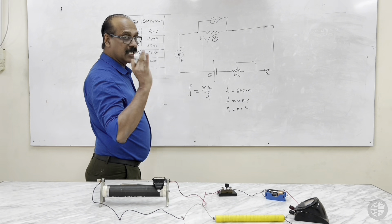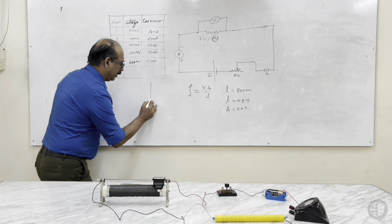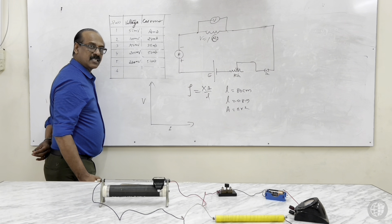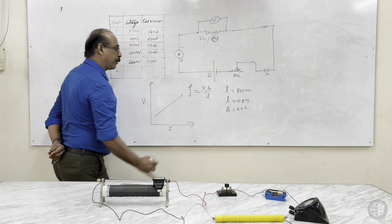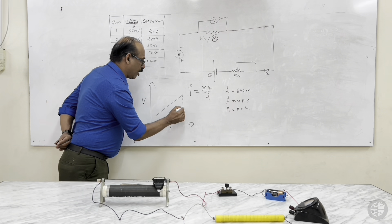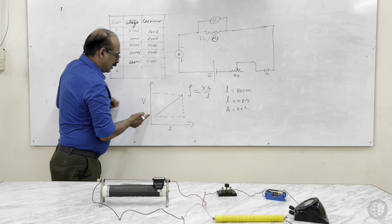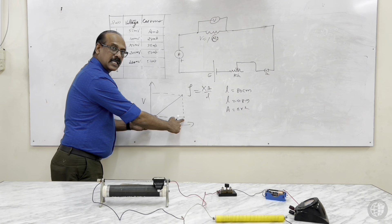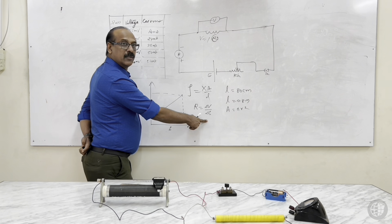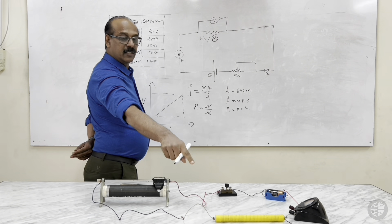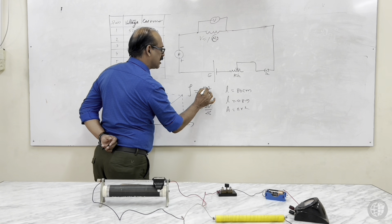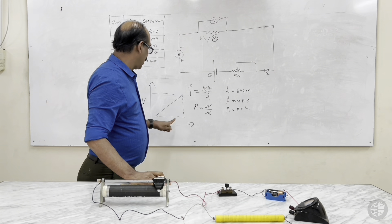Now we plot a graph. On the graph paper, voltage is along the Y-axis and current along the X-axis. After plotting, the graph will be a proportional straight line. Take the slope of the graph: delta V divided by delta I gives you the resistance. This is the resistance of this wire, marked as X or R. So rho equals R times A divided by L.